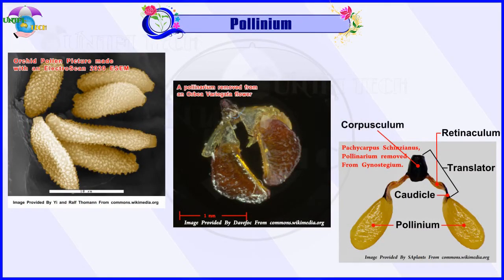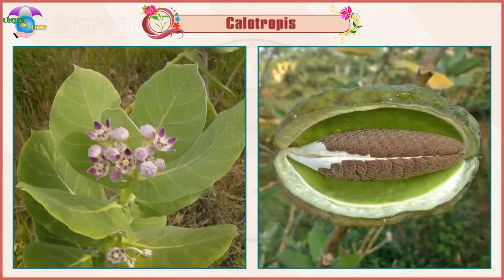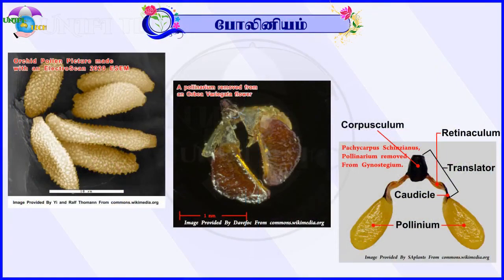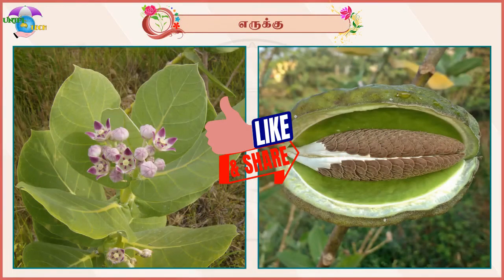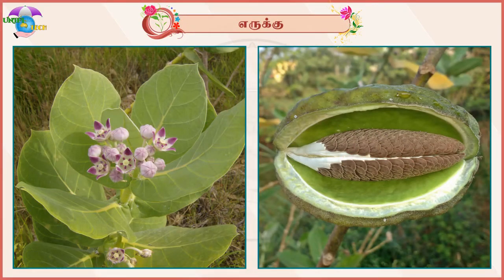In some plants, all the microspores in a microsporangium remain held together — this is called pollenium. Example: Calotropis (eruku). (Tamil: In some plants, all microspores in one microsporangium remain together forming a pollenium.)